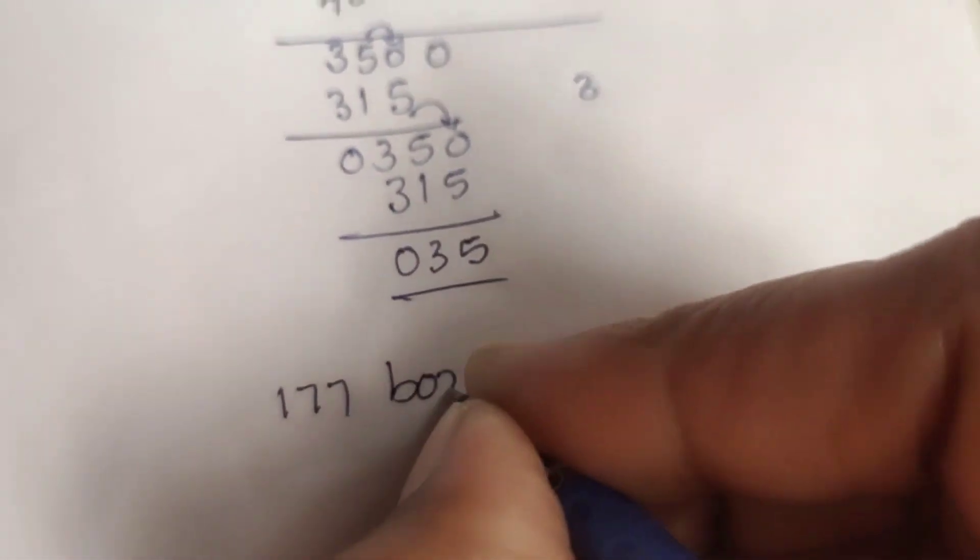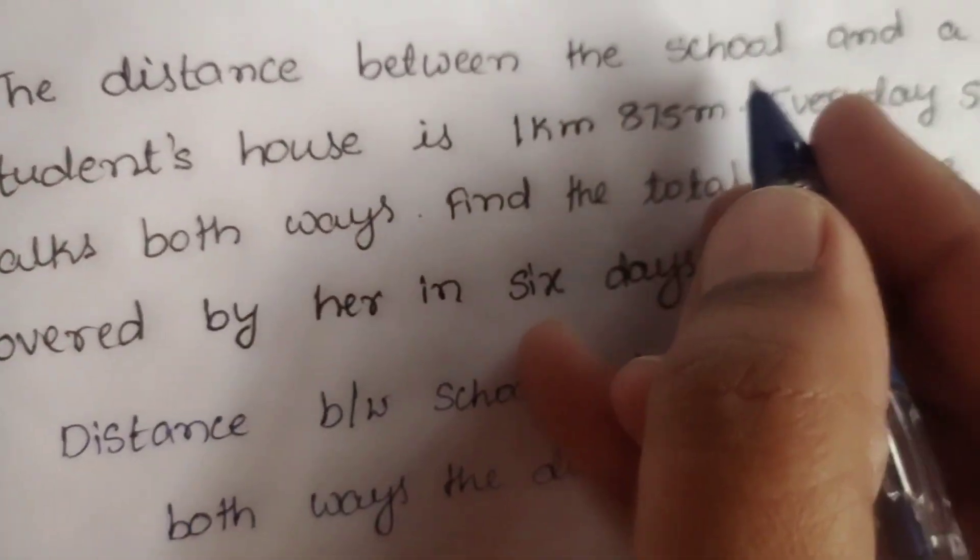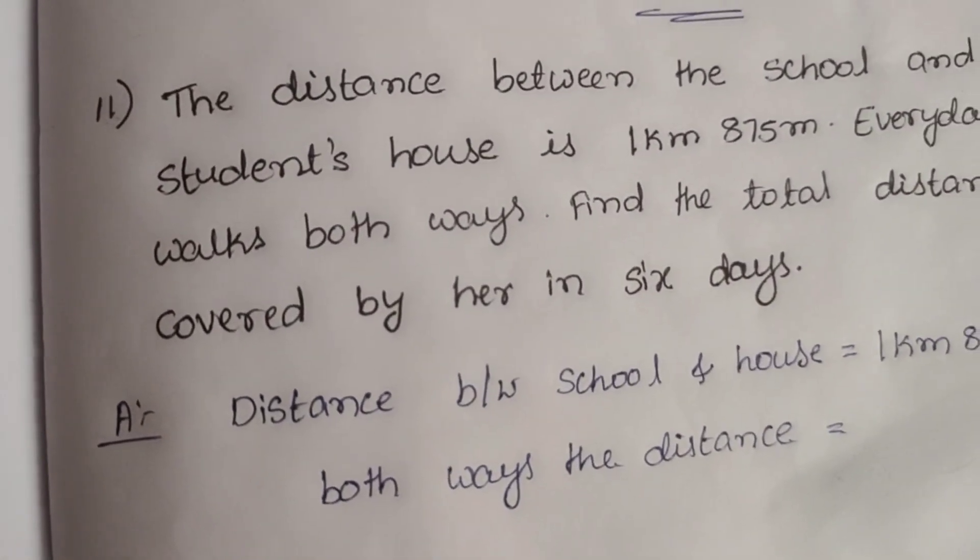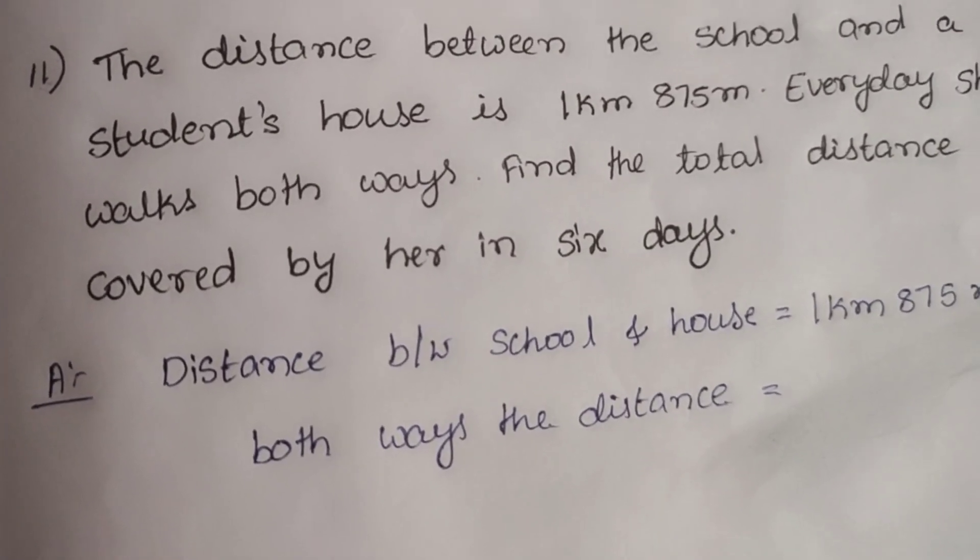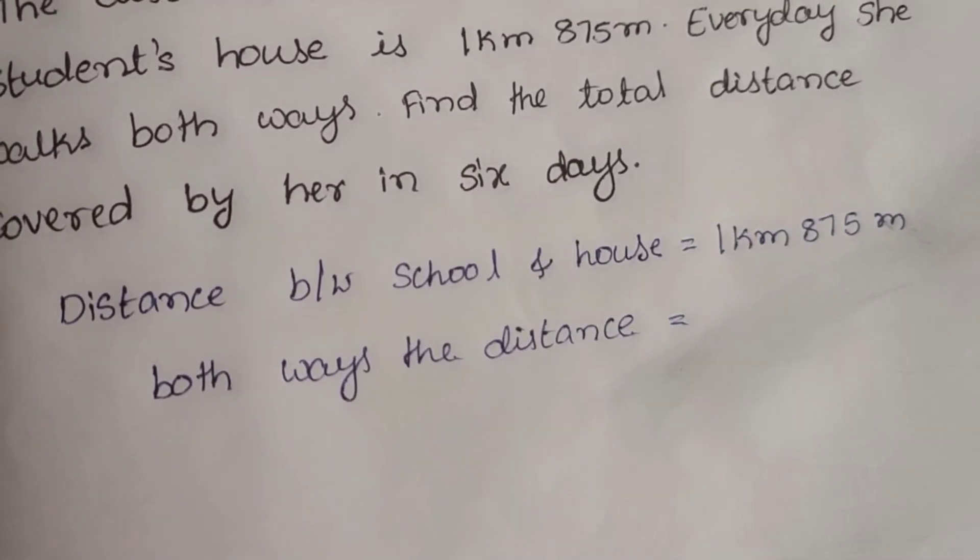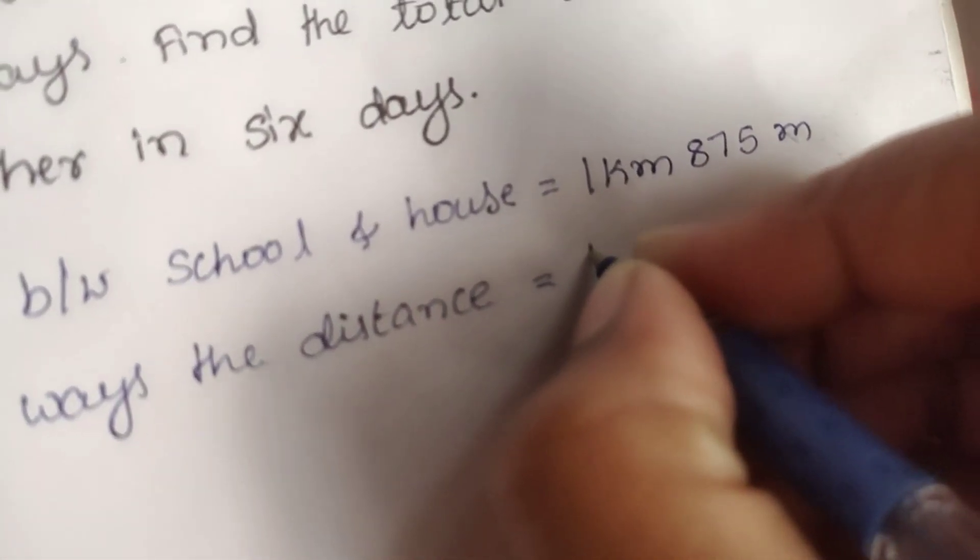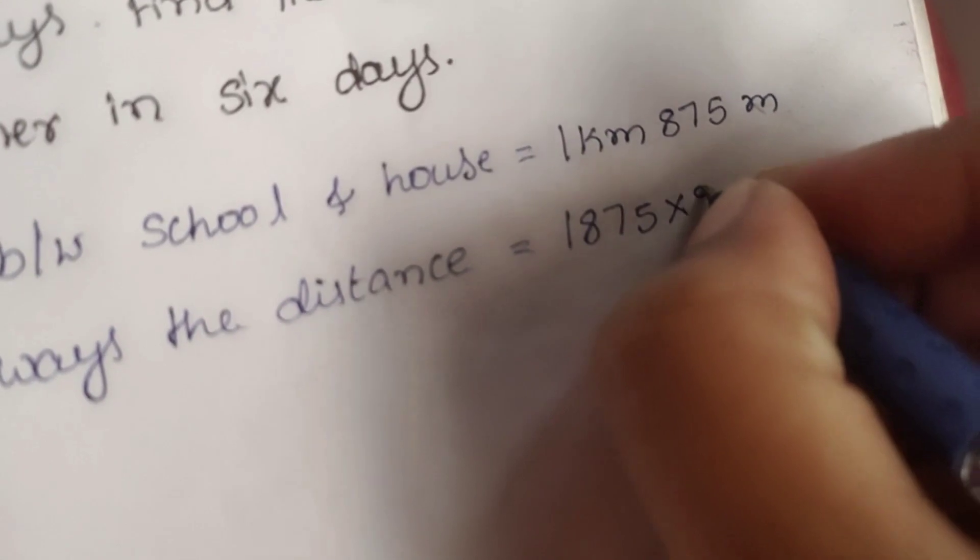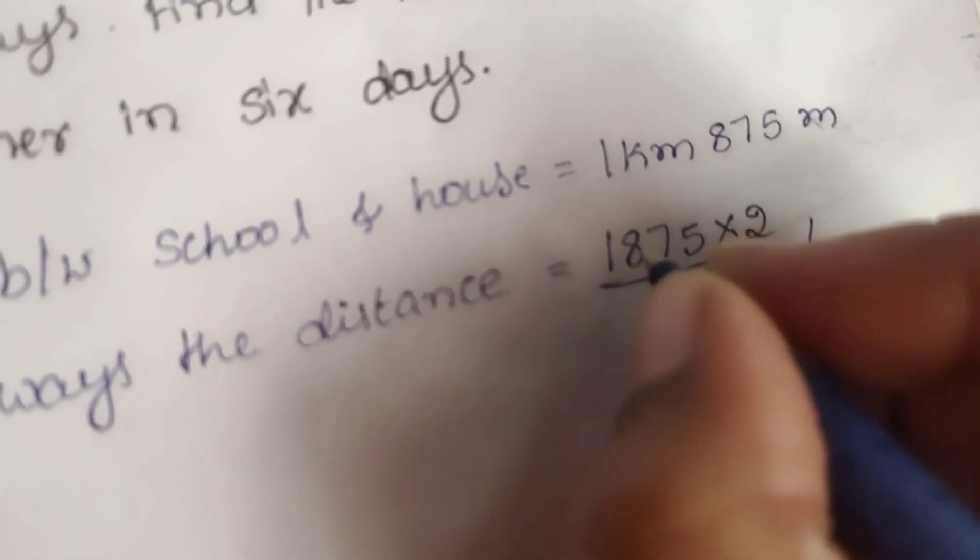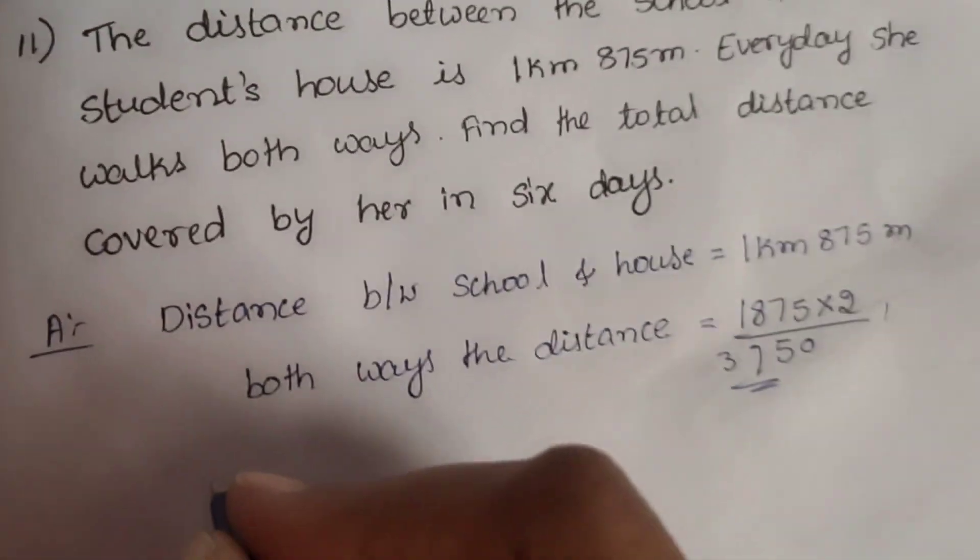Question number 11: The distance between the school and a student's house is 1 kilometer 875 meters. Every day she walks both ways. Find the total distance covered by her in 6 days. Answer: Distance between school and house is equal to 1 kilometer 875 meters. Both ways the distance is 1,000 meters plus 875 into 2. 2×5 is 10, 0, 1 carry. 2×7 is 14 plus 1 is 15, 1 carry. 2×8 is 16 plus 1 is 17, 1 carry. 2×1 is 2 plus 1 is 3.